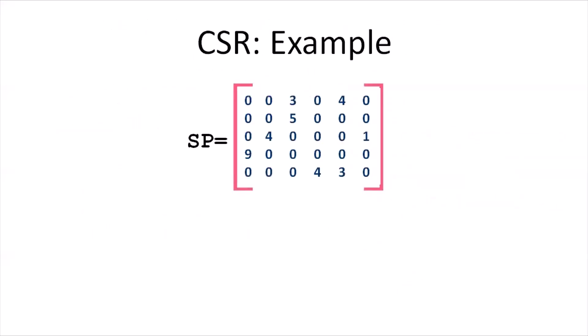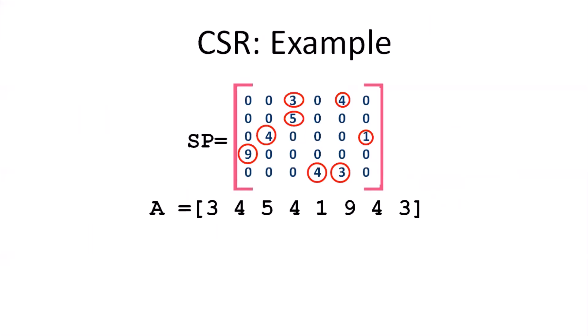For example, given a sparse matrix SP with non-zero elements marked, the vector A lists the non-zero elements one after the other as encountered during row-wise traversal. In the 0th row we have 3 then 4, so A begins with 3, 4. In row 1 we have 5, so 5 comes after. Row 2 has 4 and 1, so those are listed next. Row 3 has 9, so 9 is added. Finally row 4 has 4 and 3, giving the complete vector A.